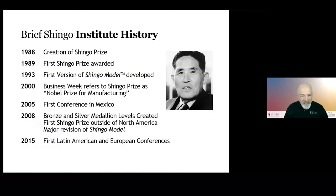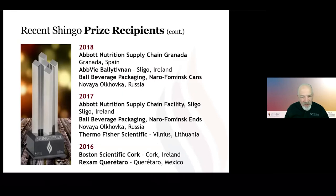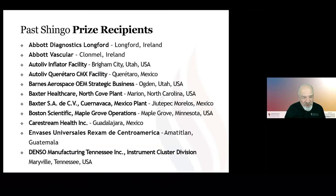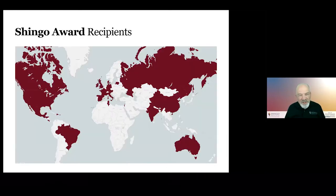We started the Shingo Prize in 1988 and awarded our first prize in 1989. Recent recipients over the last couple of years show that not very many are from North America — they come from places all over the world, and that's been true for several years. This map shows the extent of Shingo recipients around the world. We now have recipients in over 30 different countries, and the Shingo Prize has truly become a global standard of excellence.